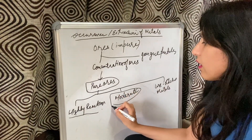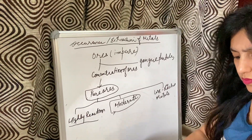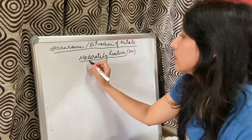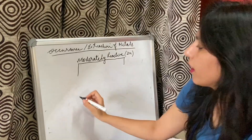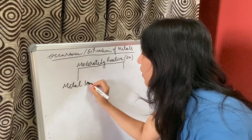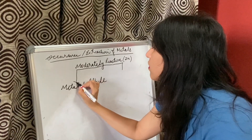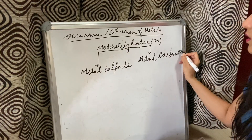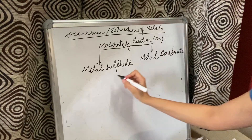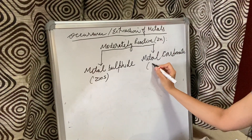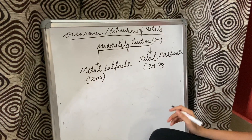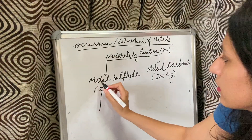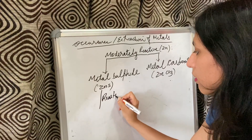First let us study about the moderately reactive metals. Suppose we have taken zinc. Zinc can be present in two forms: either as metal sulfide or as metal carbonate — so zinc sulfide or zinc carbonate. For each of these there are further different processes.